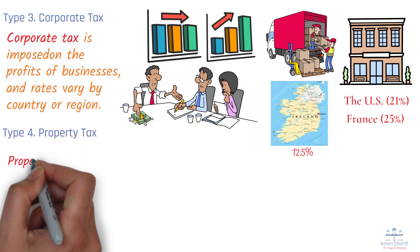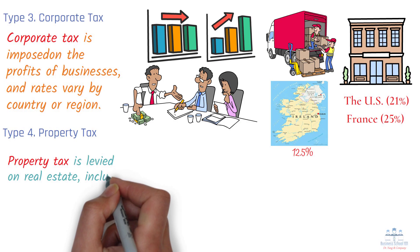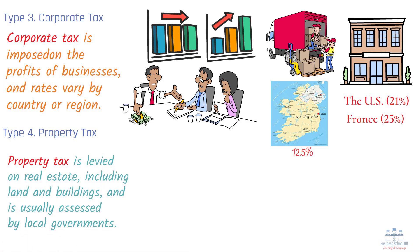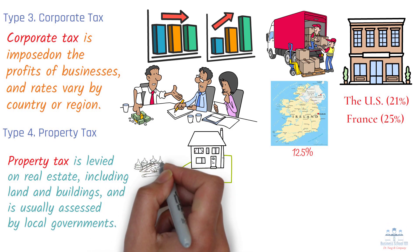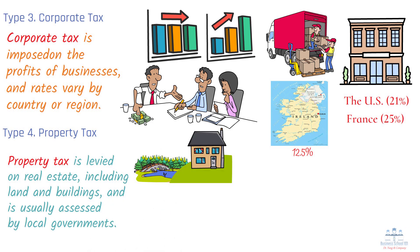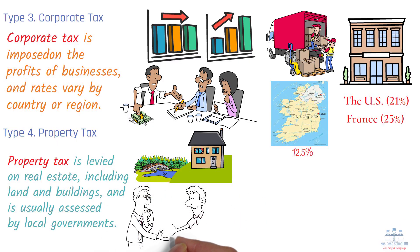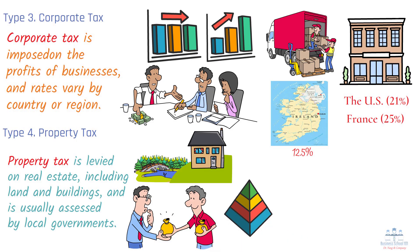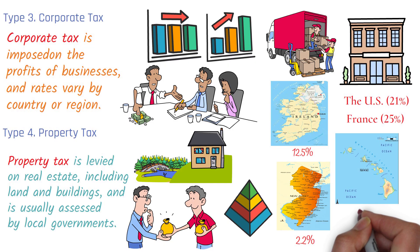Property tax is levied on real estate, including land and buildings, and is usually assessed by local governments. It is based on the market value of the property, determined by factors like location, size, and usage. Property taxes are a key source of local government revenue, funding schools, police, fire departments, and infrastructure. In the U.S., property tax rates differ significantly between states, with New Jersey having one of the highest rates at about 2.2%, while states like Hawaii have rates as low as 0.3%.